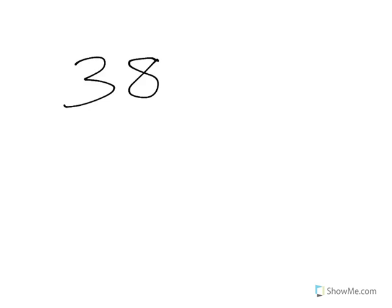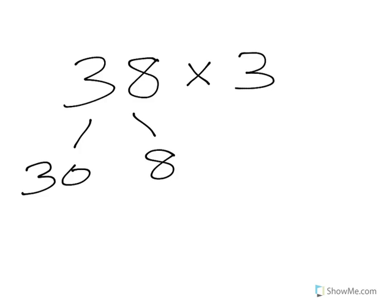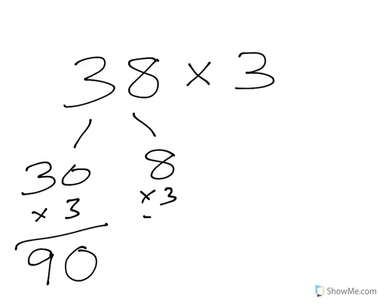Let's do one more like that. We'll do 38 times 3. Again, we're going to break this into expanded form: 30 and 8. Multiply each of those times 3. 30 times 3 gives me 90, and 8 times 3 gives me 24. Add those together and we end up with a product of 90 plus 24 equals 114. So that's another strategy you can use — the expanded form.